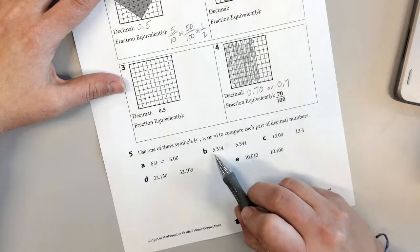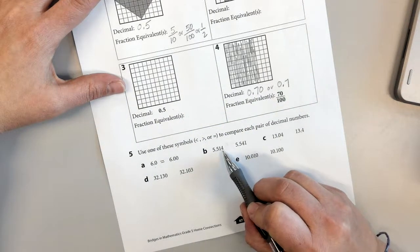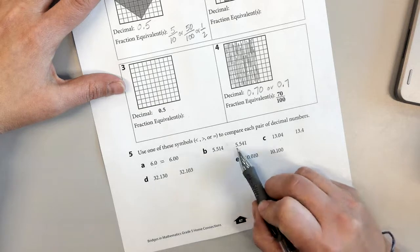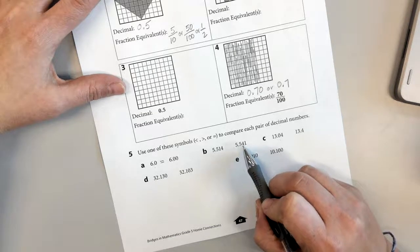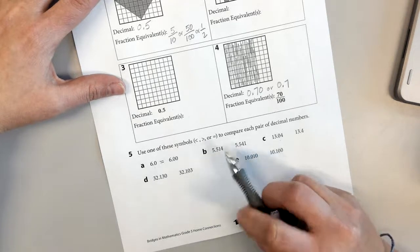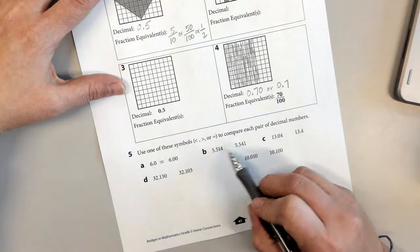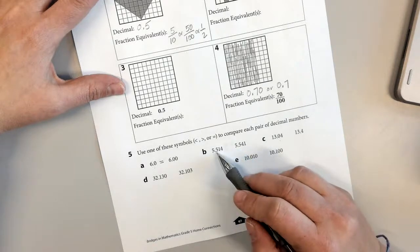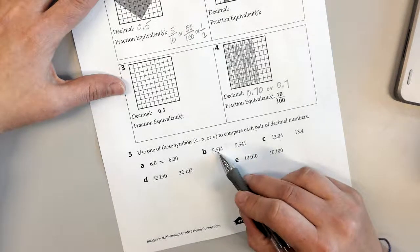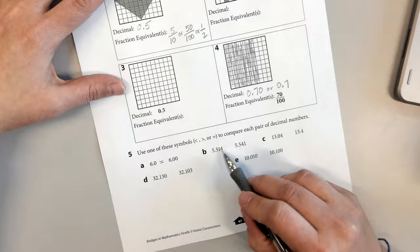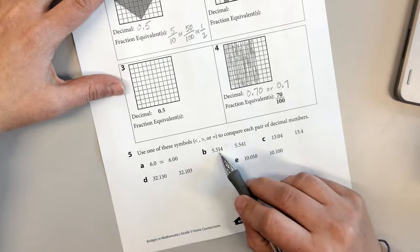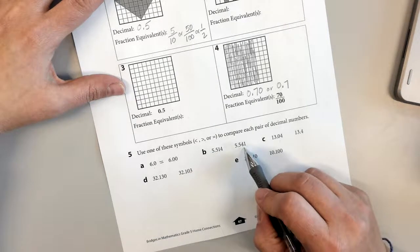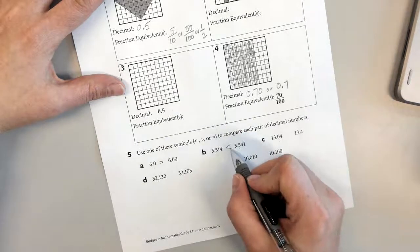On B, we have five and five hundred fourteen thousandths, and five and five hundred forty-one thousandths. So what I'm going to do is I'm going to start at the ones and compare the ones. Are they the same? Yes. Then I'm going to go to the tenths and compare the tenths. Are they the same? Yes. Then I'll go to the hundredths. Are they the same? No. This one is bigger, so that means that this number is greater.